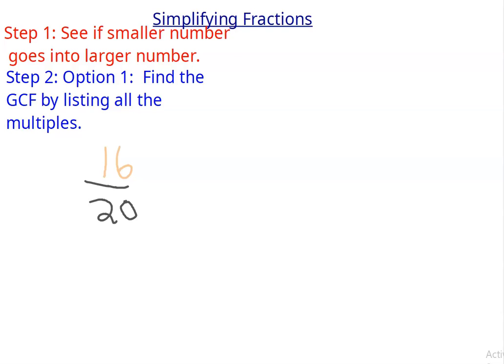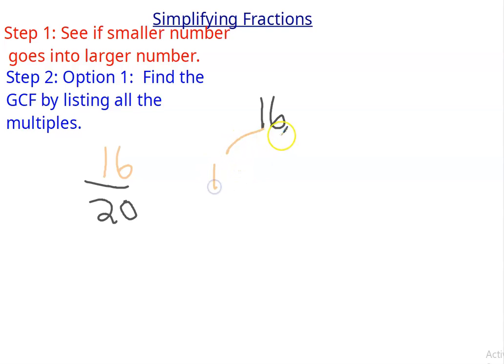But it requires a lot of work. So let's go ahead and do that. Let's list the factors of 16. I'm making a factor rainbow. So 1 — yes, 1 goes into 16 because 1 goes into everything.